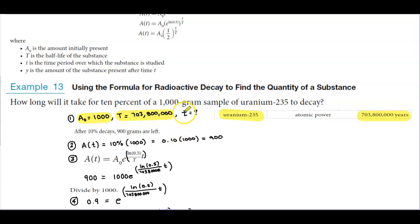And then we know that we're looking for t. But we also know that how long will it take for 10% of that 1000 gram sample? So we need to figure out after 10%, we need to know why there's 900 grams that are left.